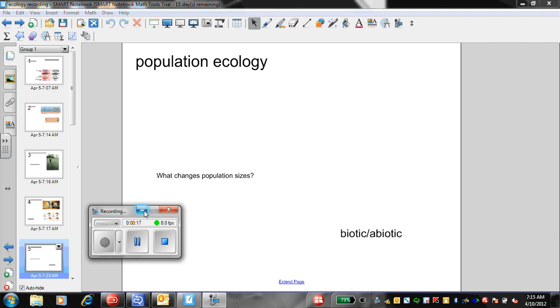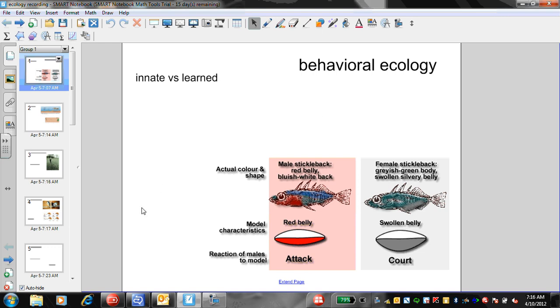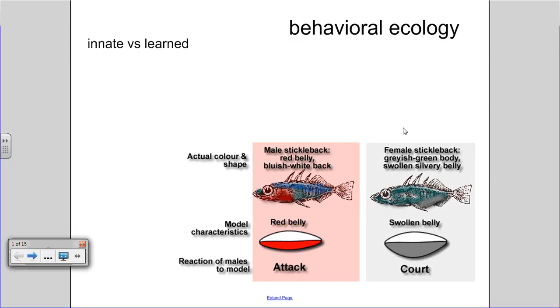The first component was behavioral ecology. When we looked at this we looked at the different types of behaviors that are exhibited by species and how that governs into the grand scheme. We'll talk about populations and communities and things like that.